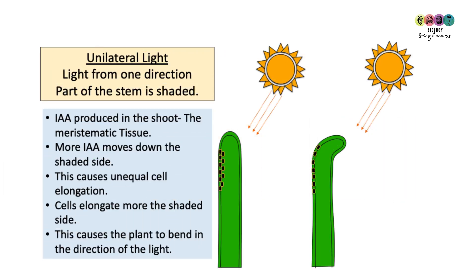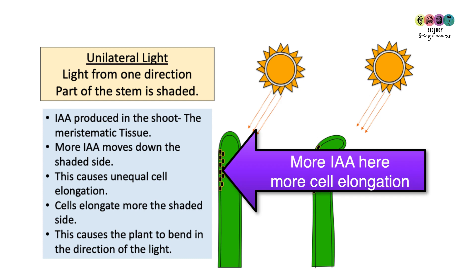When there is unilateral light — light coming from one direction only — not all of the plant shoot receives equal amounts of light, so there will be a shaded part. The IAA is still produced in the apical meristem, but it diffuses more down the shaded side. This causes those cells to elongate more, creating a bending effect, and the shoot tip bends over towards the light.